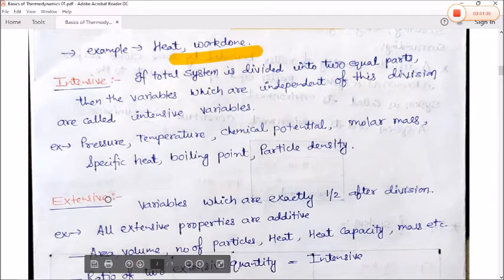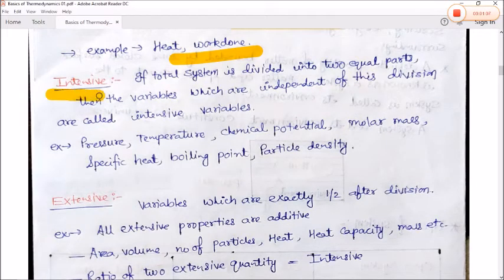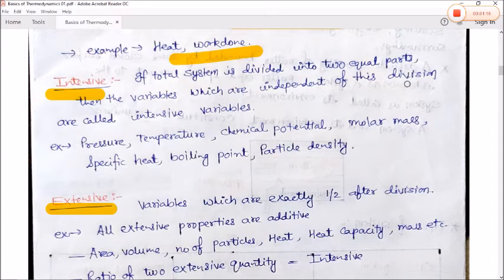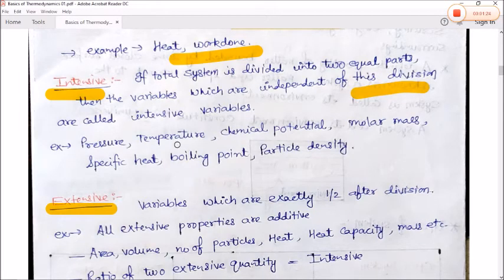Next is an important topic: extensive and intensive properties of matter. If a total system is divided into two equal parts, then the variables which are independent of this division are called intensive variables. Examples include pressure, temperature, chemical potential, molar mass, specific heat, boiling point, and particle density.